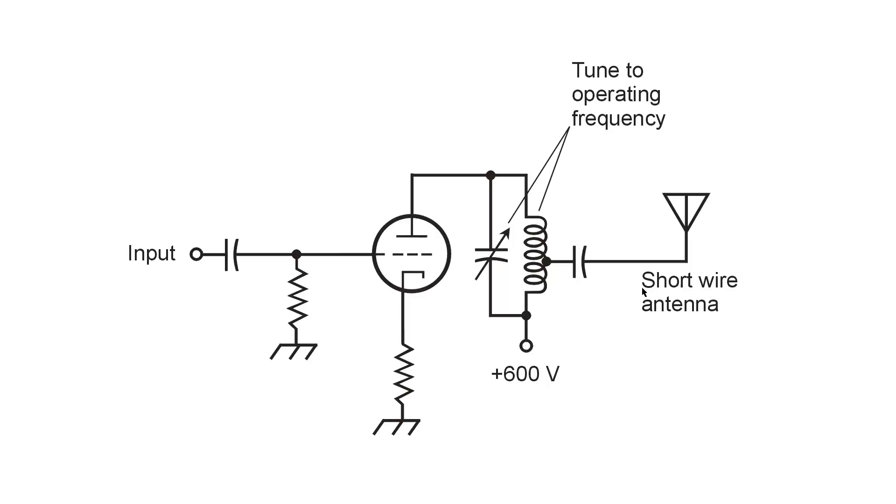What I'm showing here is a triode tube amplifier with a 100 milliwatt input signal that goes to the control grid.